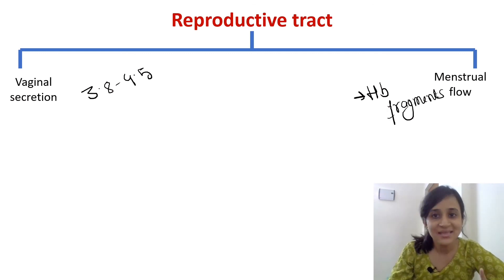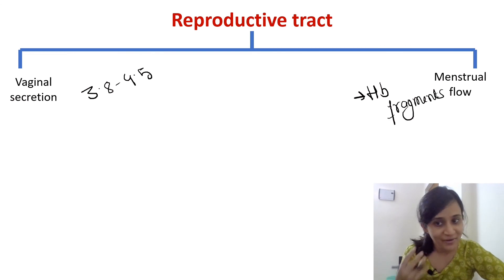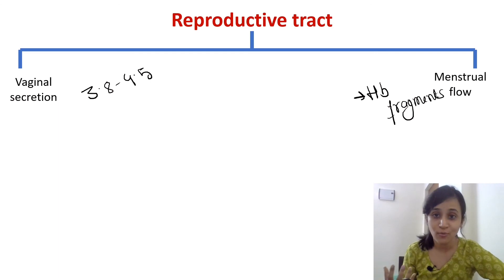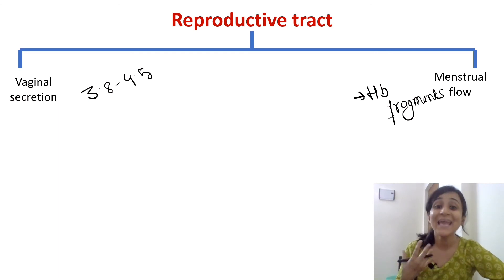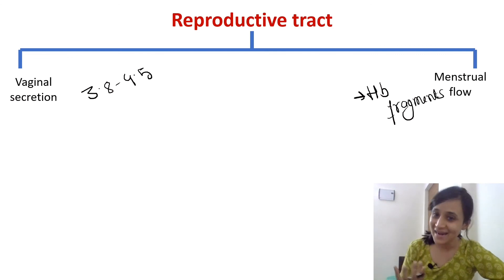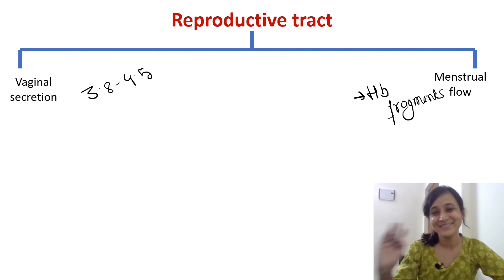This is all about the first line of defense — how our innate immunity plays a significant role in the prevention of entry of some pathogens. We will learn about the second line of defense in the next lecture. Bye-bye.